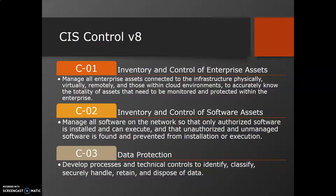The third control is Data Protection, which talks about developing processes and technical controls to identify, classify, securely handle, retain, and dispose of data. Data is very important — often called the new oil. We need to classify data, which can include personally identifiable information such as name, address, mobile number, email, credit card numbers, CVV, expiry dates, salary, and bank account details. We need to identify what type of data exists in our organization and what we want to protect.